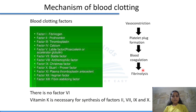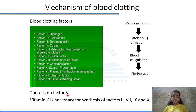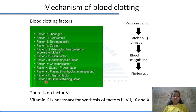There are 13 blood clotting factors. Two important points: there is no Factor 6, and Vitamin K is necessary for the synthesis of Factors 2, 7, 9, and 10. The factors are: Factor 1 — fibrinogen, Factor 2 — prothrombin, Factor 3 — thromboplastin, Factor 4 — calcium, Factor 5 — labile factor, Factor 7 — stable factor, Factor 8 — anti-hemophilic factor, Factor 9 — Christmas factor, Factor 10 — Stuart factor, Factor 11 — plasma thromboplastin antecedent, Factor 12 — Hageman factor, Factor 13 — fibrin stabilizing factor.